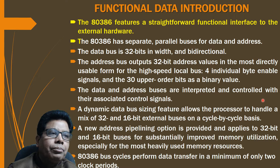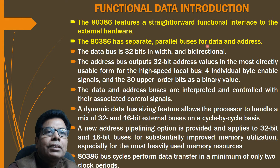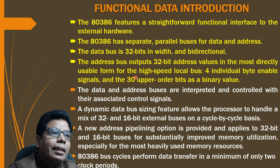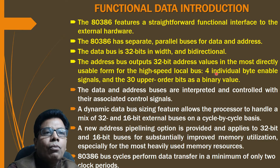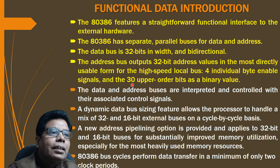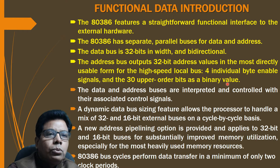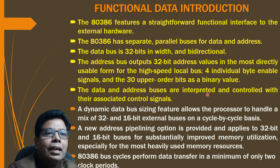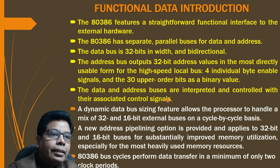The 80386 features a straightforward functional interface to external hardware. The 386 has separate parallel buses for data and address — there is no multiplexing. The data bus is 32-bit in width and bi-directional. The address bus outputs 32-bit address values: four individual byte enable signals and 30 upper-order bits (A2 to A31) as binary values. The data and address buses are controlled with their associated control signals.